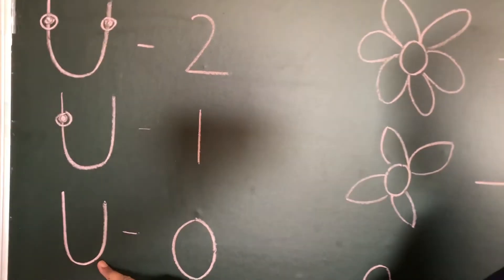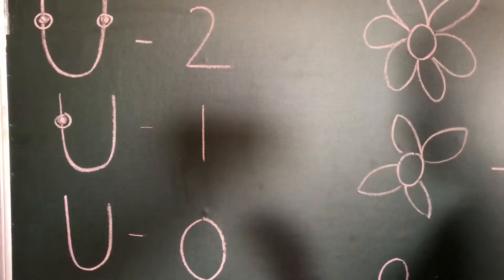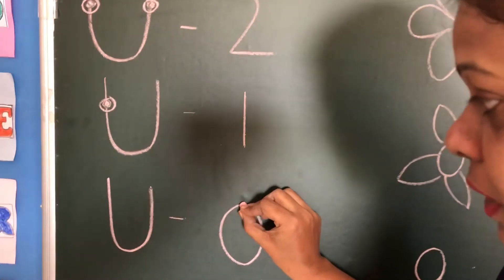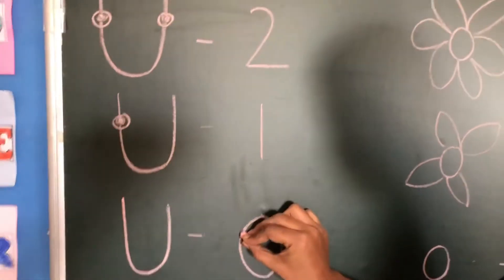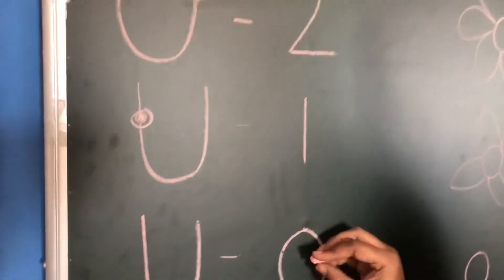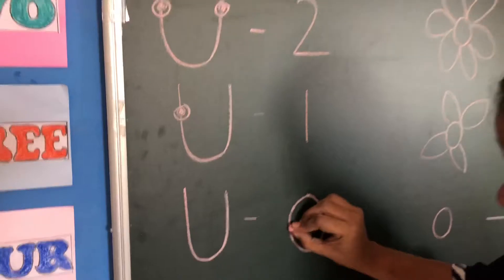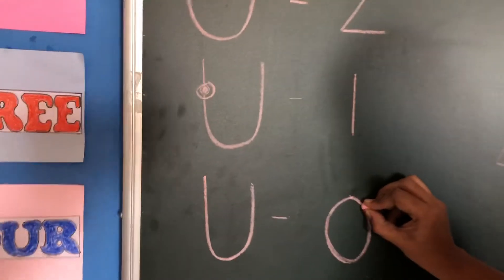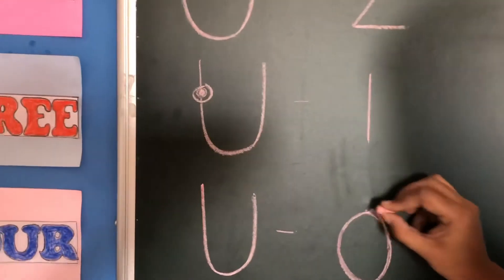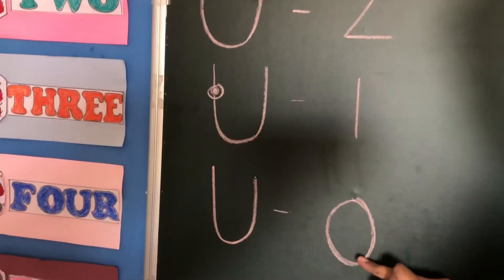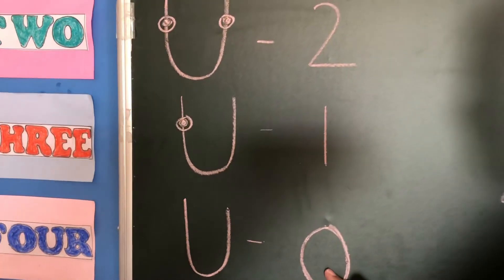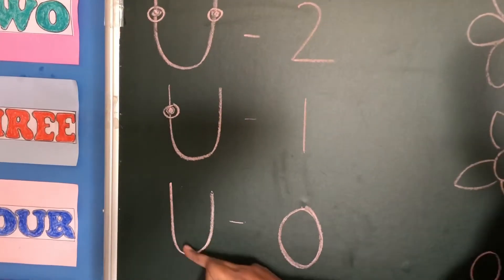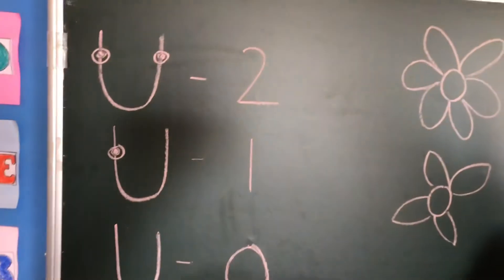So what number will come if it doesn't have anything? That number is called zero. This is a new concept for you. See, this is zero — it is similar to 'O' but we don't write it that way. See, this is a circle, this is zero. If you don't have anything, that is zero.